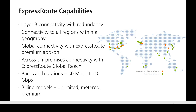The second pricing model is metered connection, where the customer is billed based on how much they use. For example, if a customer uses the ExpressRoute connection to transfer 100 terabytes of data, they are charged based on the data volume and the bandwidth tier chosen. The third is a premium option, which enables additional capabilities like the ability to add a large number of routes in the route table and the ability to connect multiple VNets.